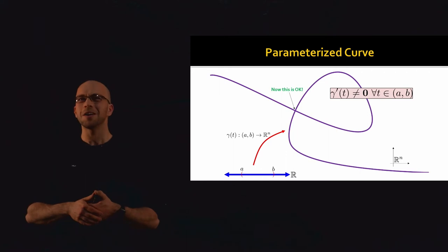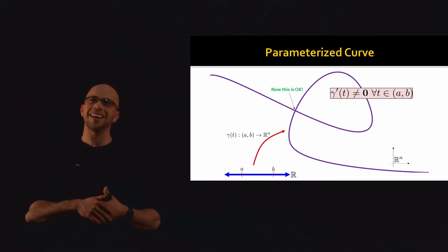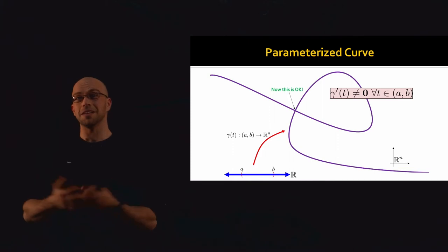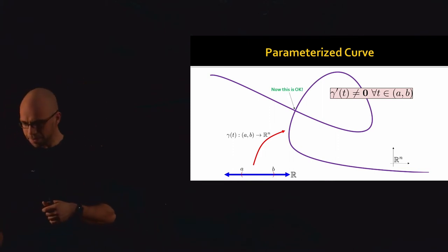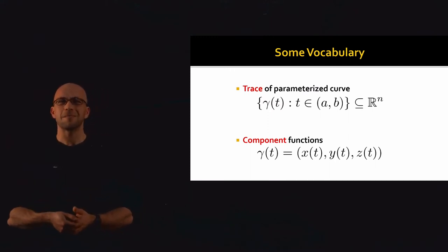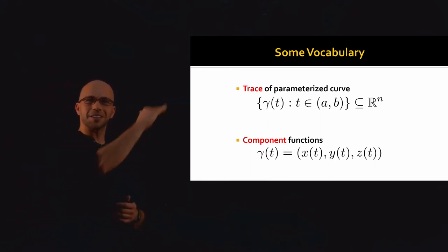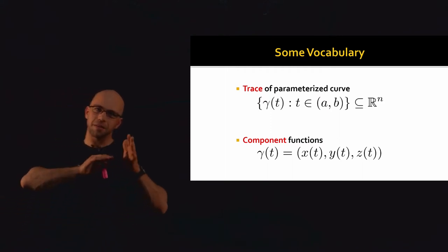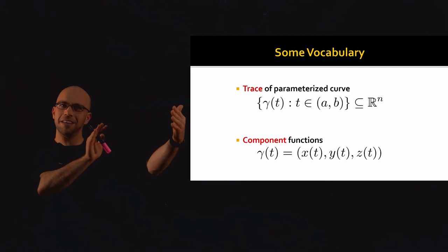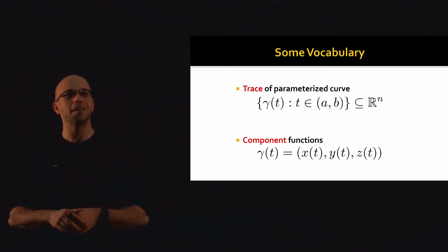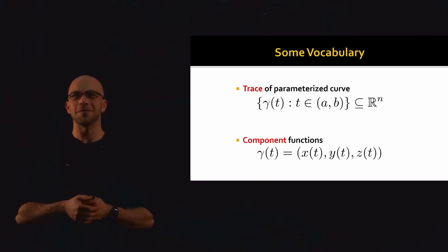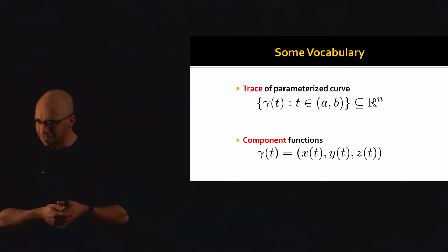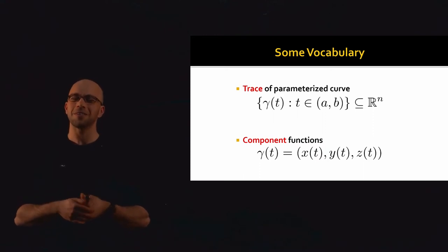One can show that every curve satisfying the formal definition is also a parametrized curve — at least locally by definition, and in fact globally. A little vocabulary: since parametrized curves are given by functions, we can talk about the trace of a parametrized curve, which is the set of points traced out by gamma. The function gamma(t) goes from time t into x, y, z simultaneously, and we can call the x, y, z functions individually the component functions of our curve.